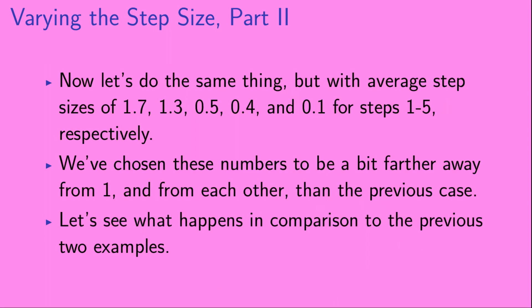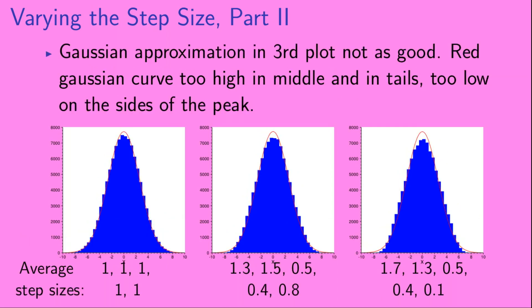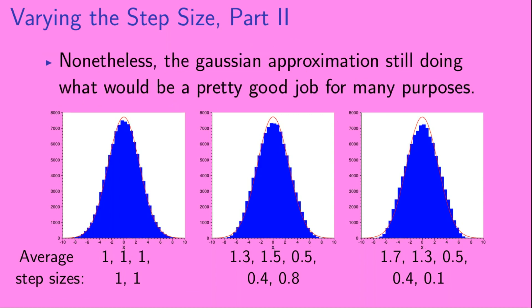Now let's do the same thing again but with average step sizes of 1.7, 1.3, 0.5, 0.4, and 0.1 for steps 1 through 5 respectively. We've chosen these numbers to be a bit farther away from 1 and a bit farther away from each other than in the previous case. Comparing the three cases, with the newest example on the right, we can see that the Gaussian approximation in the third plot is not as good. The red Gaussian curve is too high in the middle of the plot and in the extreme tails, and too low on the sides of the peak. Nonetheless, the Gaussian approximation is still doing what would be a pretty good job for many purposes.